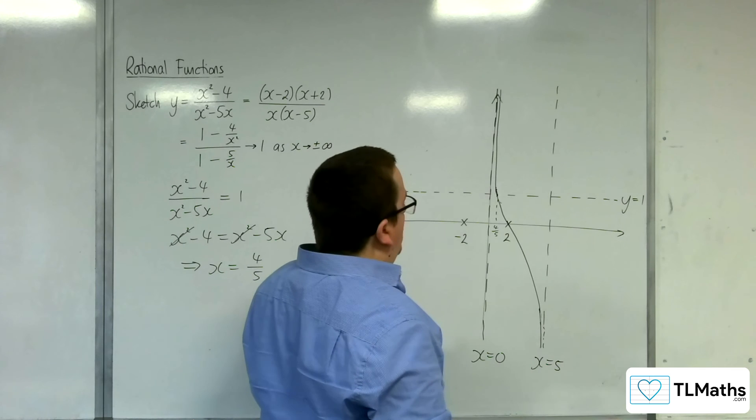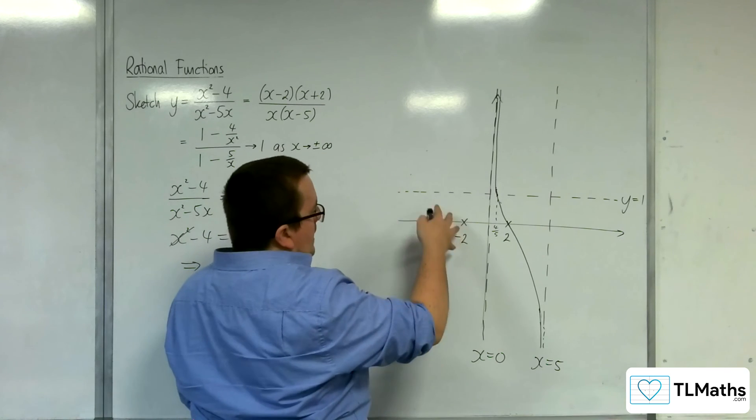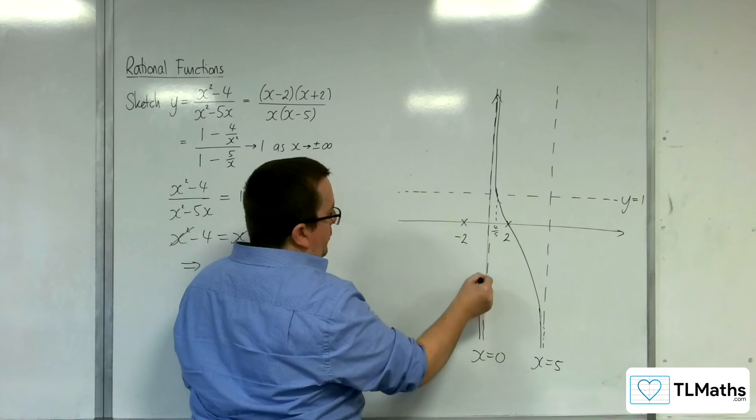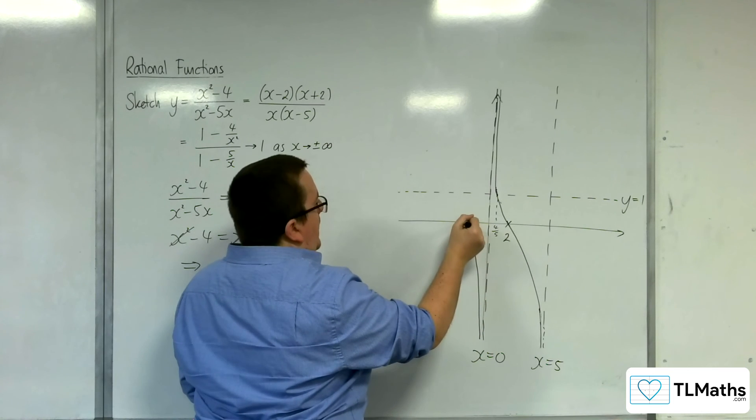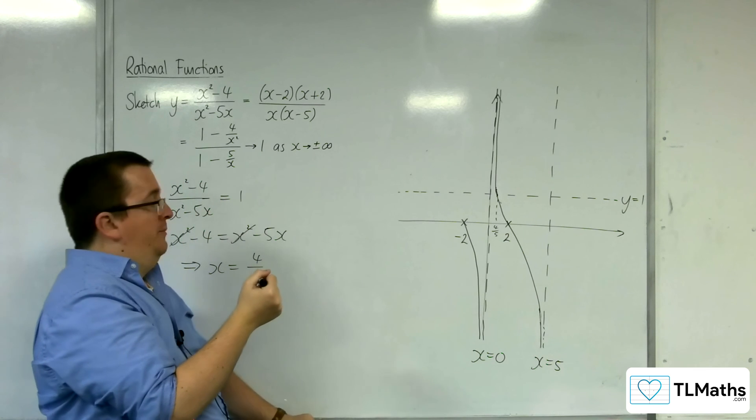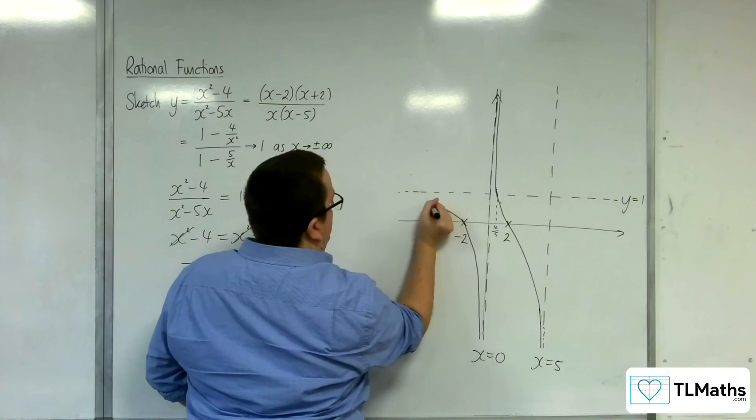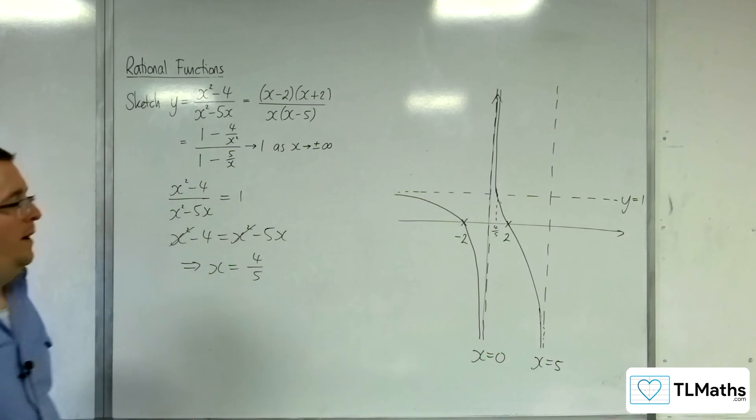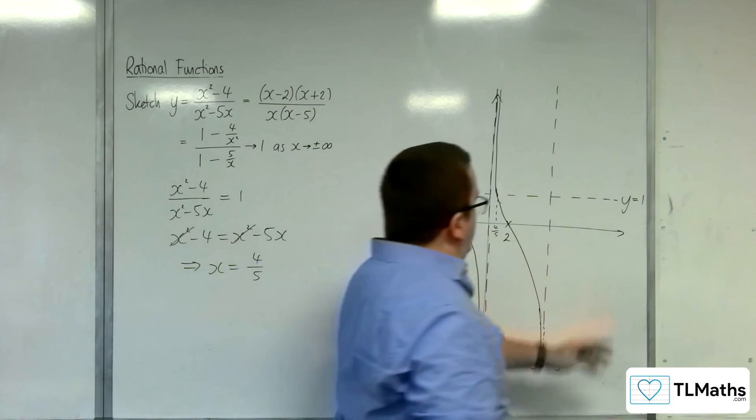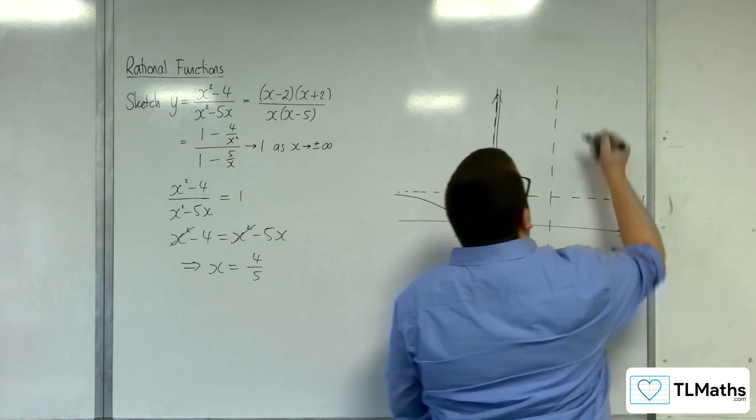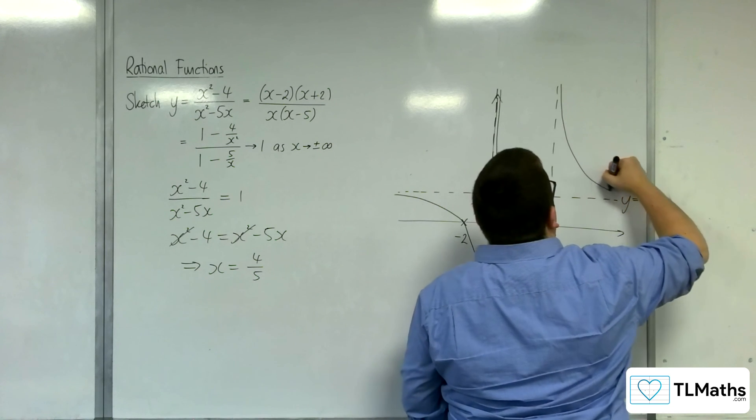So how about the other parts of the graph? Over here, we must be coming up from this direction in order to cross through at minus 2. And we're not going to be crossing through the horizontal asymptote again, because there's only one point of intersection. And so then it must just tend towards y equals 1. And to the right of x equals 5, we can't be down below, because we can't cross the x-axis there. And so it must look like that.